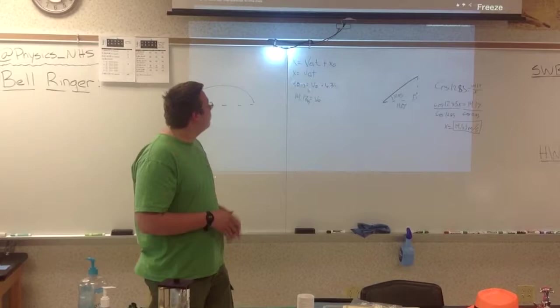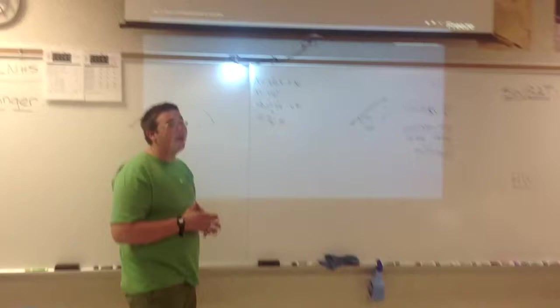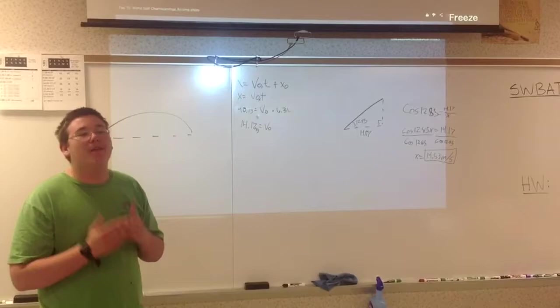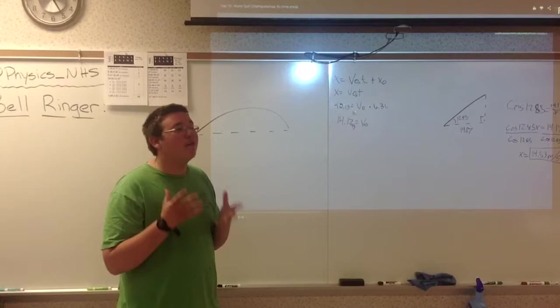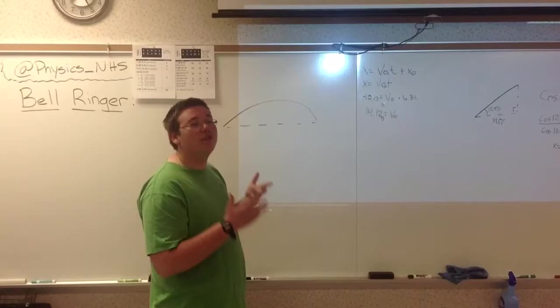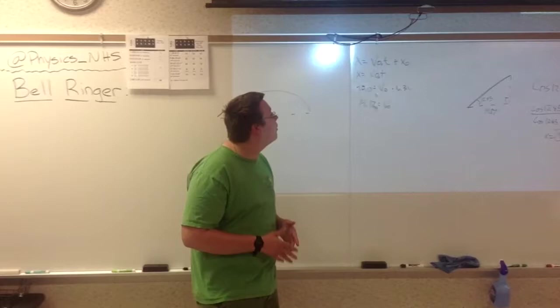So we can look at this equation, x equals V0t plus x0. This specifically refers to the speed of the ball in the x direction. In other words, along this way. Because we know that the only acceleration acting on the ball while it's in mid-air is actually due to gravity, which is in the y direction.